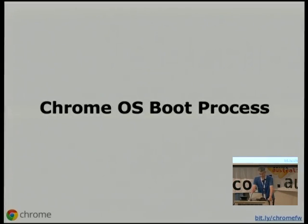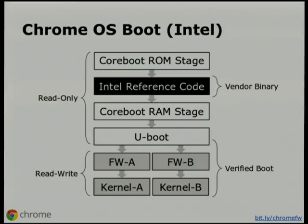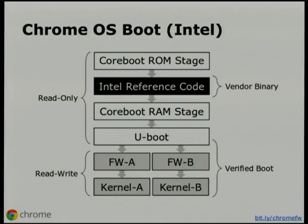I'm going to talk about the boot process for both an Intel system and an ARM system. For Intel, the stages of Coreboot look pretty familiar: we start up in ROM stage, run the vendor binary that's closed to get memory, go into RAM stage, load U-Boot, then load a potentially read-write firmware that might contain any fixes or updates, and then from there it loads a kernel. I mentioned A and B here because we have two copies of firmware. You may update firmware B, tell us to try and boot that firmware, and then you may do the same with the kernel. These don't actually have to be tied together — firmware A could load kernel B based on priorities set in the GPT partition table.